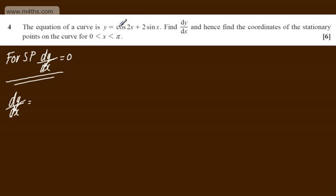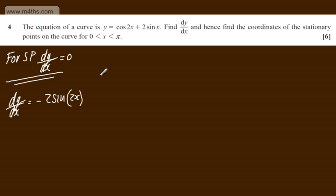If I differentiate cos2x, I need to differentiate the outside function and multiply through by the derivative of the inside function. The derivative of cosx is -sinx, so this is going to be -2sin2x. If we differentiate 2sinx, we're going to have +2cosx.